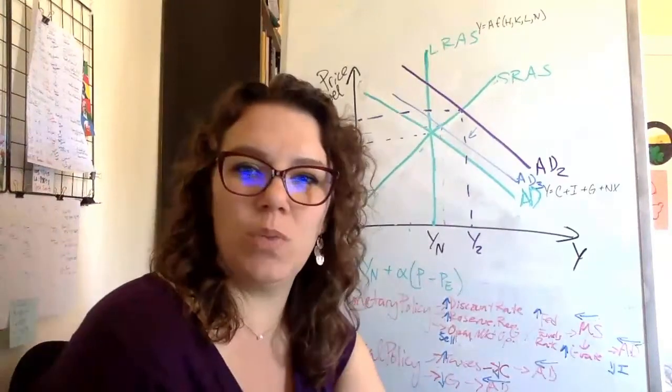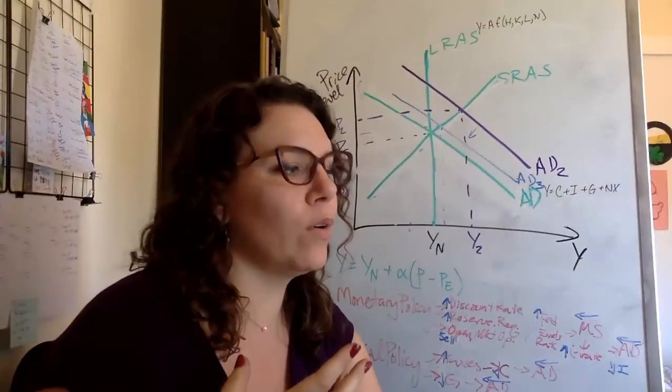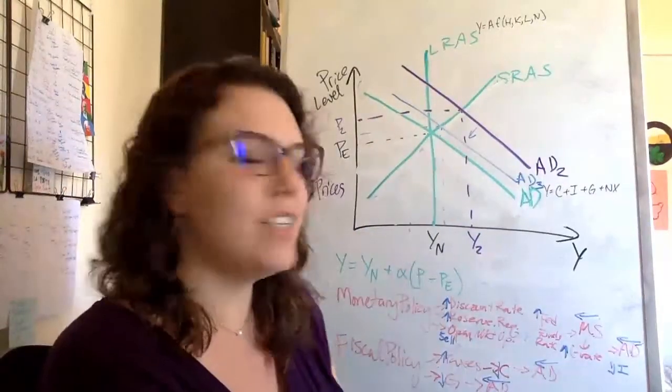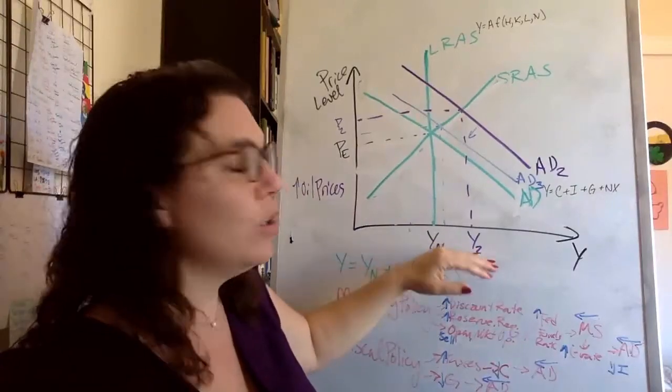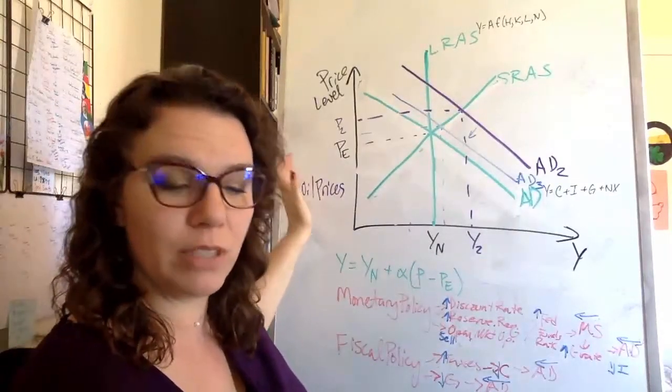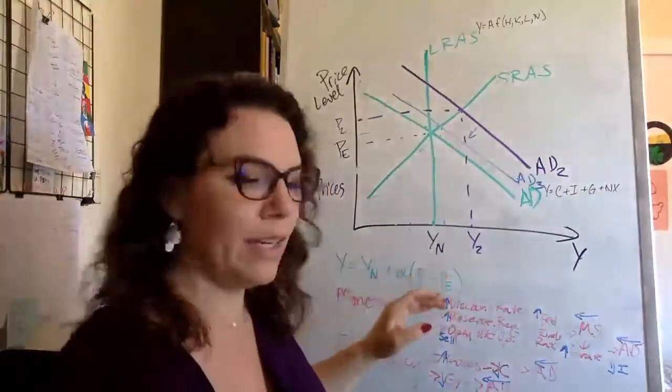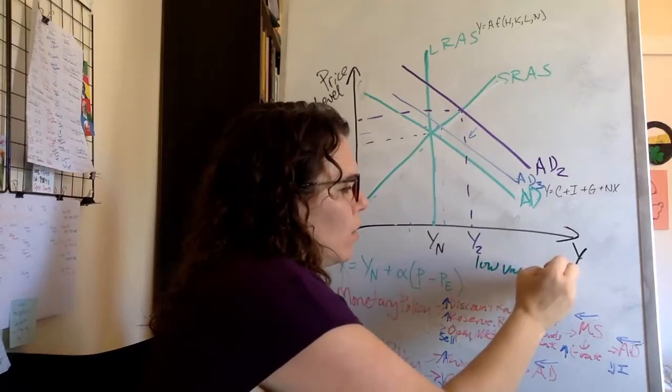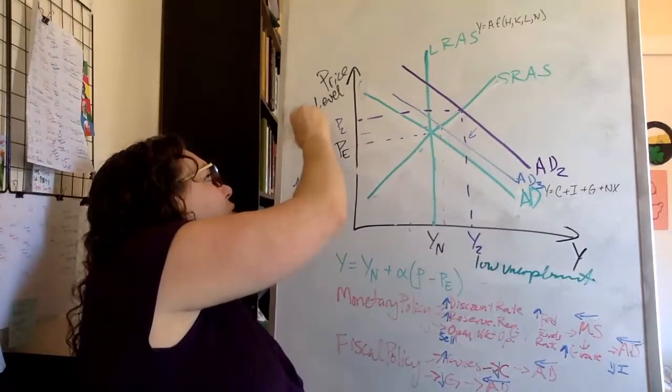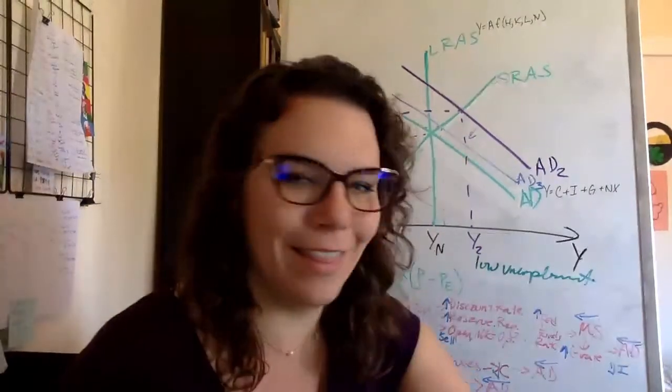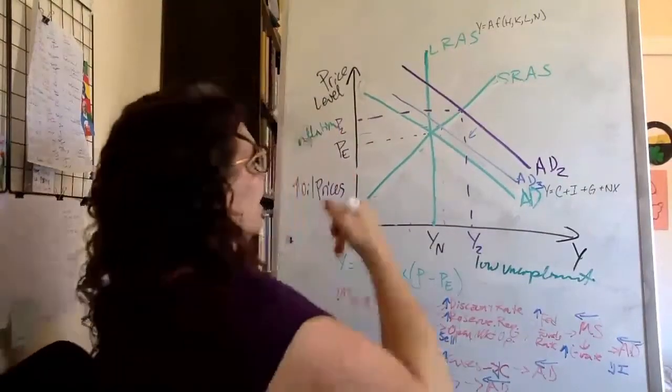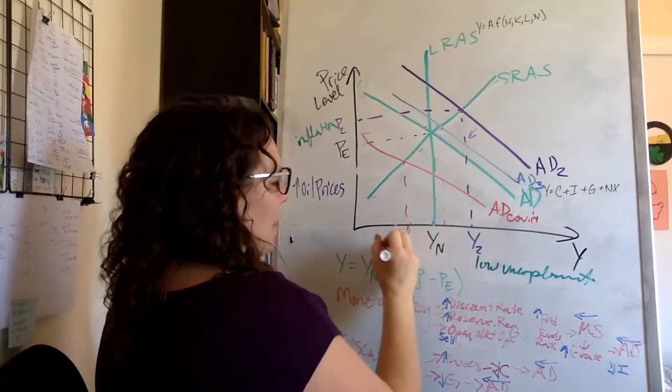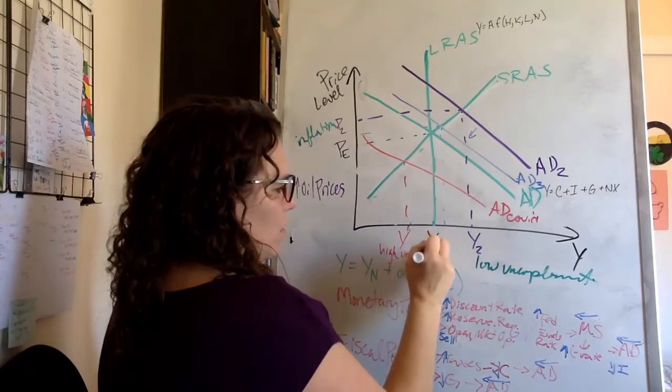We could also raise taxes to reduce consumption to shift aggregate demand in or decrease government spending to shift aggregate demand in. And so this gets at one of the questions we didn't talk about a lot, which is this question of whether or not the Federal Reserve should target a set inflation level or zero inflation. And this idea that there's two targets, it's not just high output, low unemployment, it's also stable, low manageable inflation. And that's why it's important to remember that when we're in a period of very high output and low unemployment, we're going to be in a period of inflation. On the other hand, when we're in the global pandemic and we're down here, we're experiencing COVID aggregate demand, we've got low GDP and high unemployment.